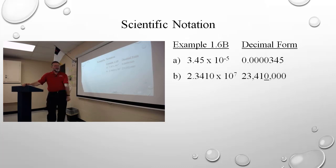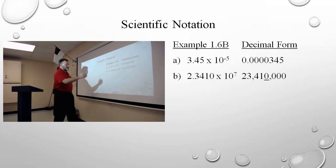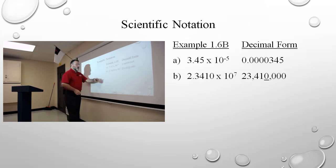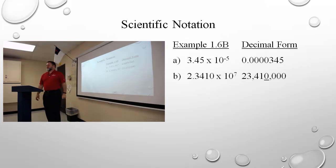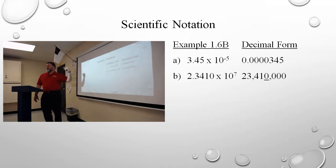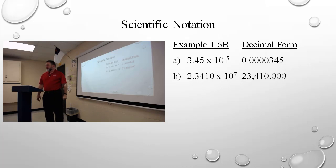But here's the rub. When I see 2.3410 times ten to the seventh on the exam — which of those numbers are significant? The two — yes. The three — yes. The four — yes. The one — yes. The zero — yes. I now write that out in decimal form: it's 23,410,000. Which digits are significant over there? The two, three, four, and the one. That zero that I have underlined on the board lost its significance in decimal form.